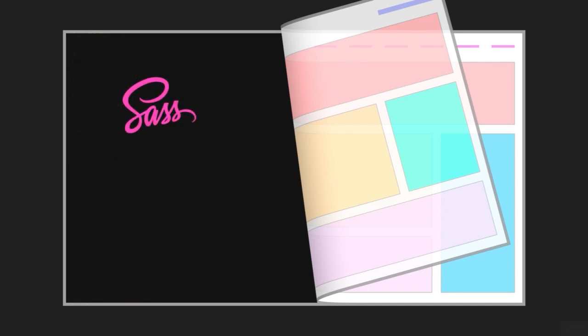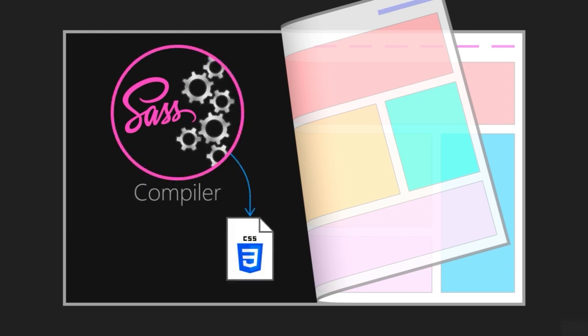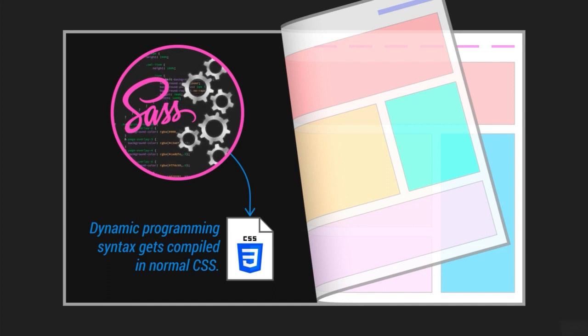Modern UIs are extremely complex and difficult to build using only CSS, as often you will find yourself repeating CSS code while styling. SASS comes to the rescue by providing a compiler which allows us to define the style sheet with CSS-style coding but with more dynamic programming syntax, which eventually gets compiled into normal CSS.